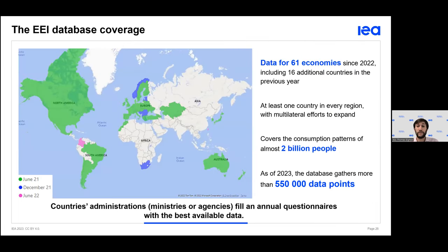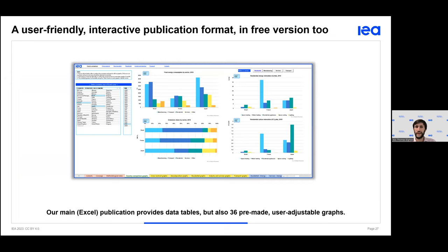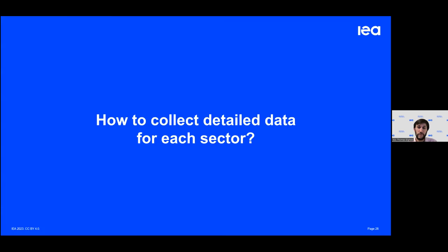Currently, the EI database covers 61 economies — that is almost 2 billion people. We wish to include as many countries as possible and are always working bilaterally with multiple institutions in countries or international institutions to make this database as representative and complete as possible. We invite any of you to reach out to discuss how we can assist you in collecting and using data.